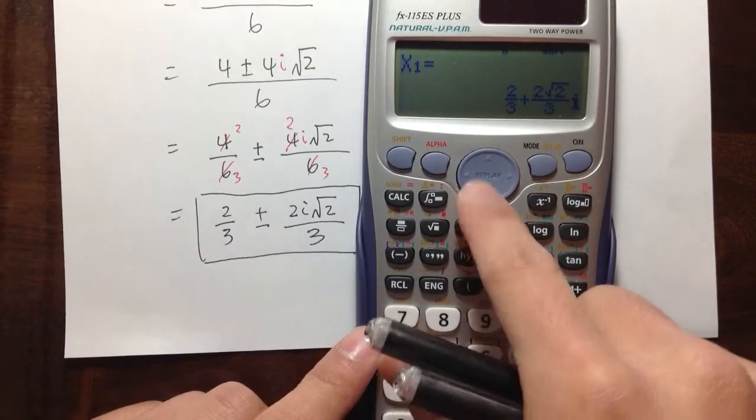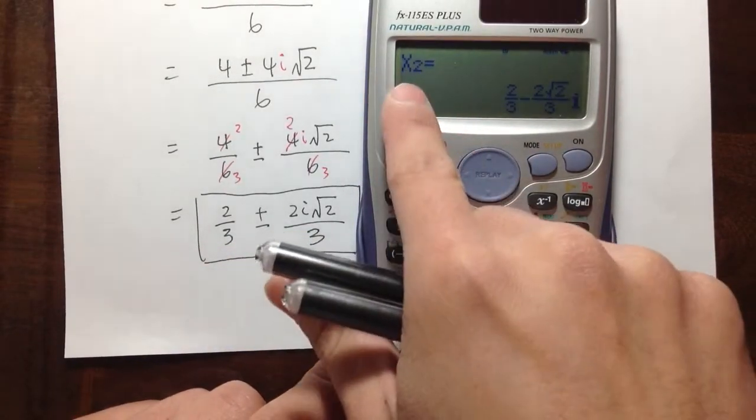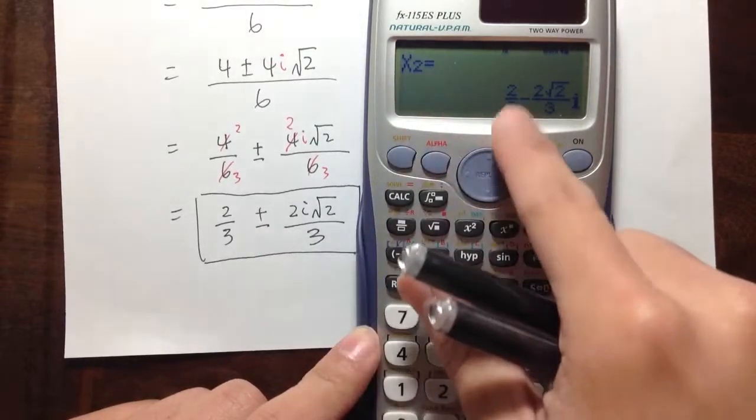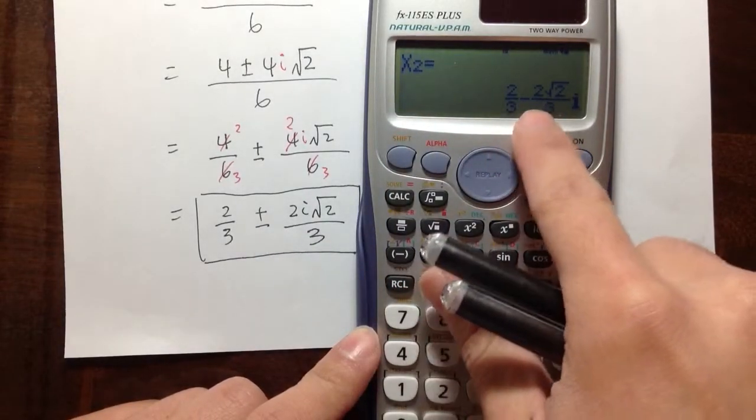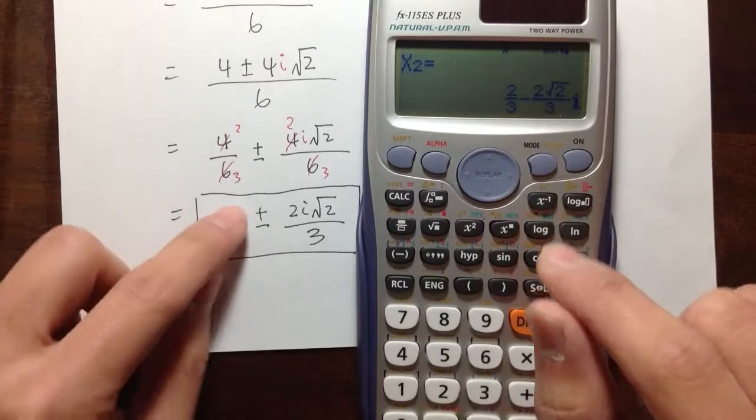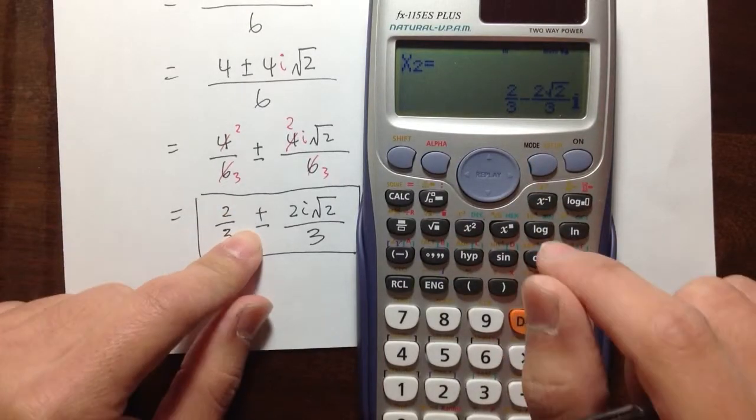And then if you press the down button, x₂, the second answer, 2/3. But instead of a plus, we have a minus. And that's exactly what this means, plus or minus. We have two answers. And that's exactly what we got on the paper.